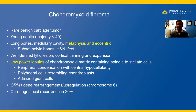Radiographically, this is a well-defined lytic lesion with cortical thinning and expansion, which raises a radiographic differential diagnosis of non-ossifying fibroma, which we discussed in case two. Histologically, chondromyxoid fibroma has a distinctive low-power lobular architecture with a chondromyxoid matrix and spindled to stellate cells — sometimes more plump and polyhedral, resembling chondroblasts. The peripheral condensation with central hypocellularity helps identify this lobular architecture.